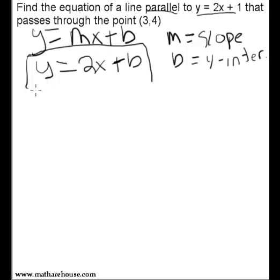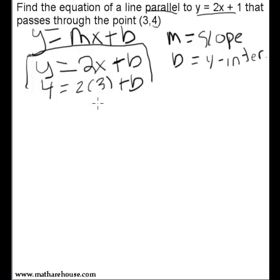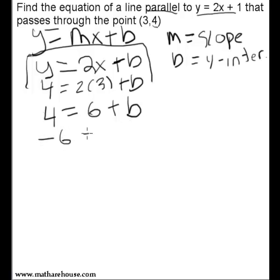Let's see what happens when we substitute 4 in for y and 3 in for x. What you end up with is an equation — one equation with one unknown. So we can now solve this and find b and get our answer. All we have to do is simplify and solve: subtract 6 from both sides. b equals negative 2.